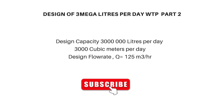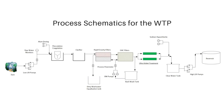So our design flow rate that we will be working with from now onwards is 125 cubic meters per hour. This means we are going to size everything in this design — from the flocculation tanks to the clarifier, the filters, and even the pipework — all based on that flow rate. The flow rate is also used to calculate how much chemical we are going to be dosing into the water.